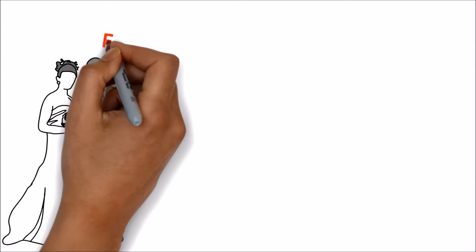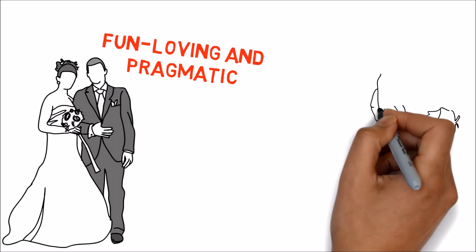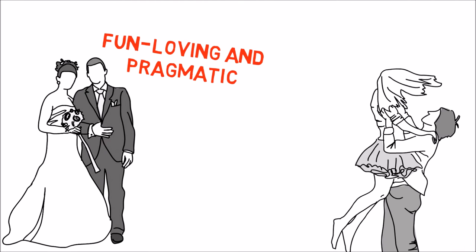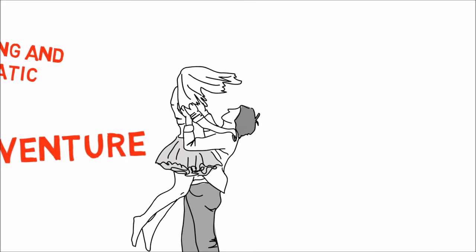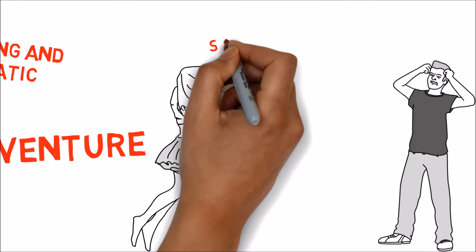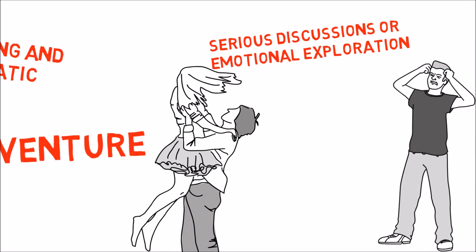In relationships, the ESTP is fun-loving and pragmatic. Hedonistic and flirtatious, ESTP partners tend to keep things exciting. They are often pursuing adventure and like a playmate who will come along for the ride. ESTPs tend to have little patience for serious discussions or emotional exploration, preferring to keep things fun and action-packed.